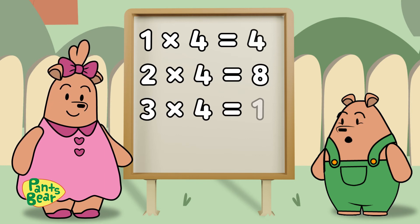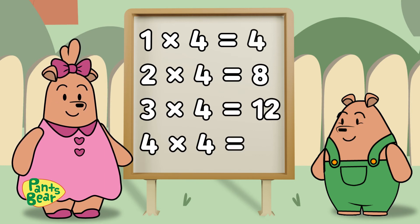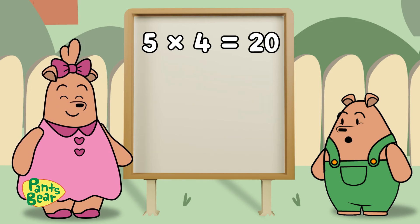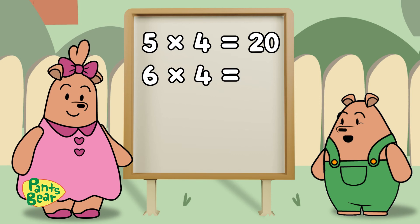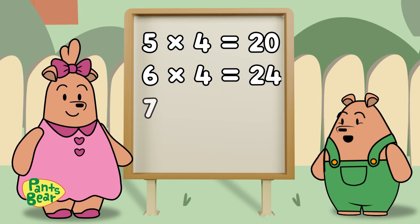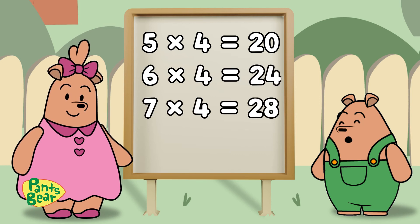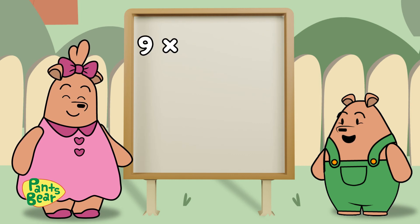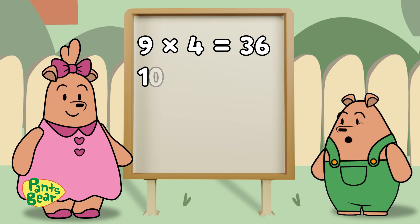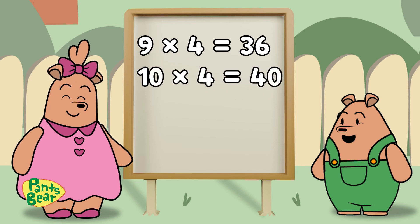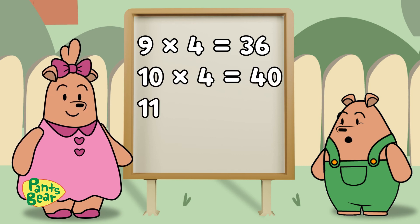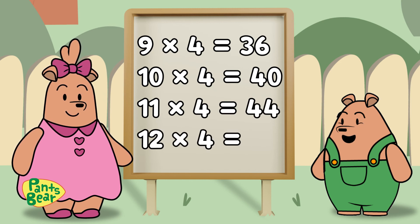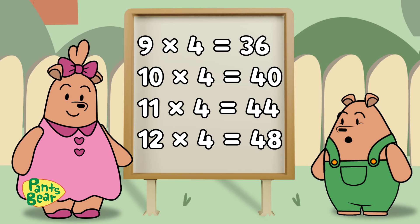Multiplication of 4. 1×4=4, 2×4=8, 3×4=12, 4×4=16, 5×4=20, 6×4=24, 7×4=28, 8×4=32, 9×4=36, 10×4=40, 11×4=44, 12×4=48.